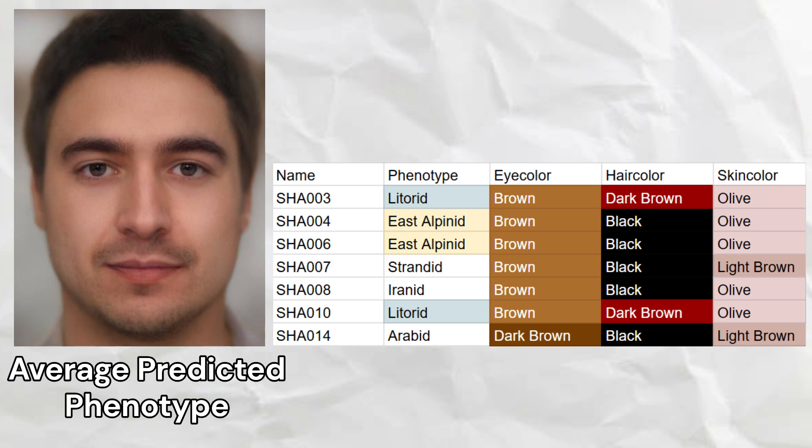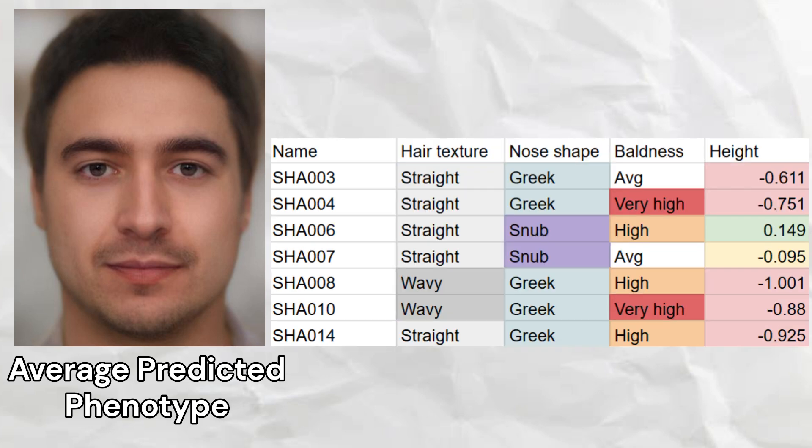Almost every sample was predicted to have brown eye color, with the exception of one sample who had dark brown eye color. Five out of seven samples had black hair, and two samples had dark brown hair color. Five out of seven samples had olive skin tone, and two samples had light brown skin tone. Five out of seven samples had straight hair, and two samples had wavy hair texture.